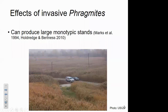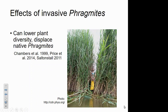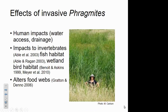Invasive Phragmites can form large, nearly monotypic stands as it spreads in a wetland complex, and with that spread it has been documented to lower plant diversity and displace native Phragmites occupying similar habitats. This has further effects both for humans — interfering with water access or drainage — and on wildlife, with impacts to invertebrates, fish habitat, wetland bird use, and fundamentally altering the structure and function of food webs.